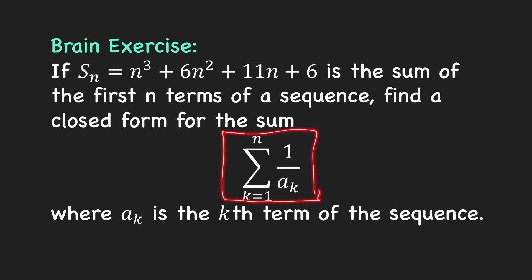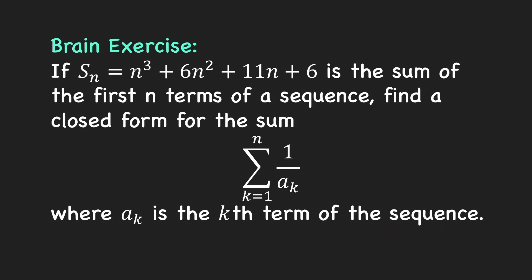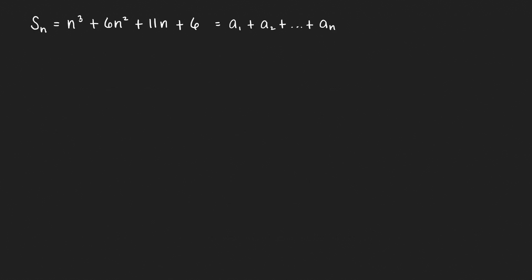When we say closed form, we need a formula without the summation, where a sub k is the kth term of the sequence. So S sub n is equal to n cubed plus 6n squared plus 11n plus 6, and this is the sum of the first n terms of our sequence.